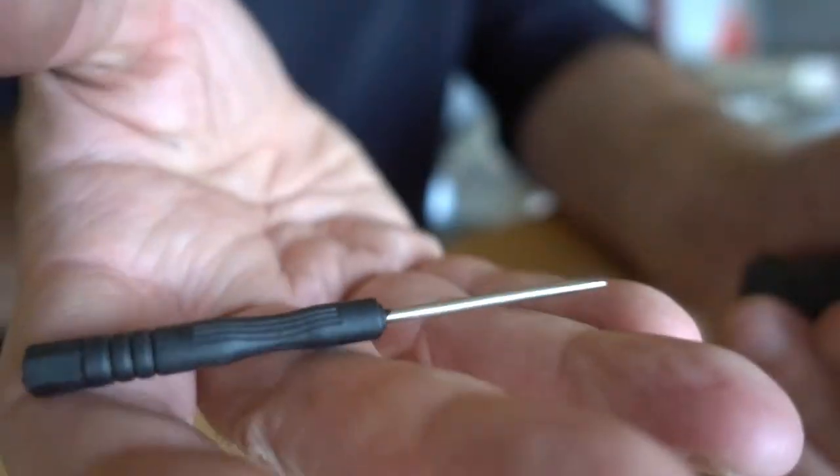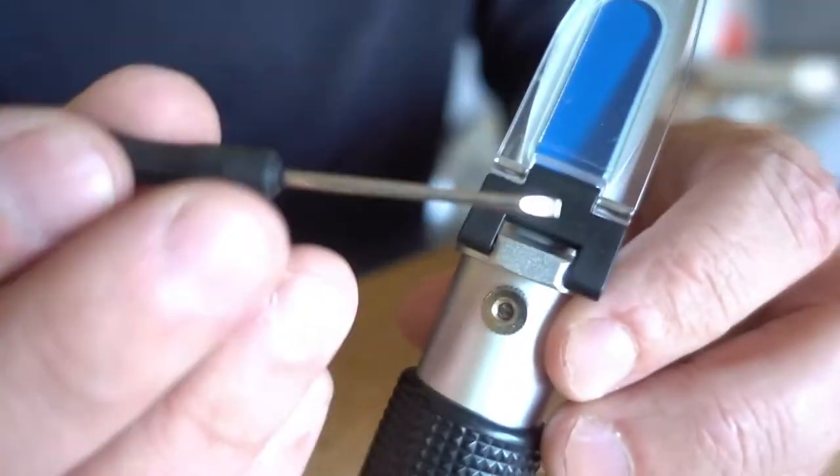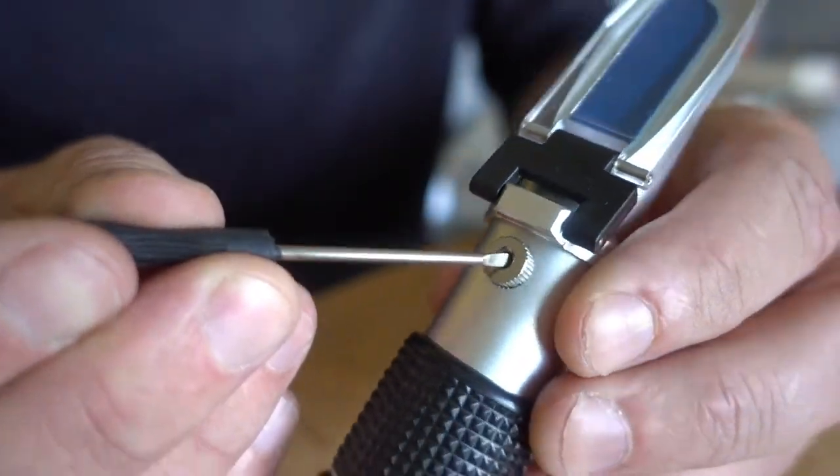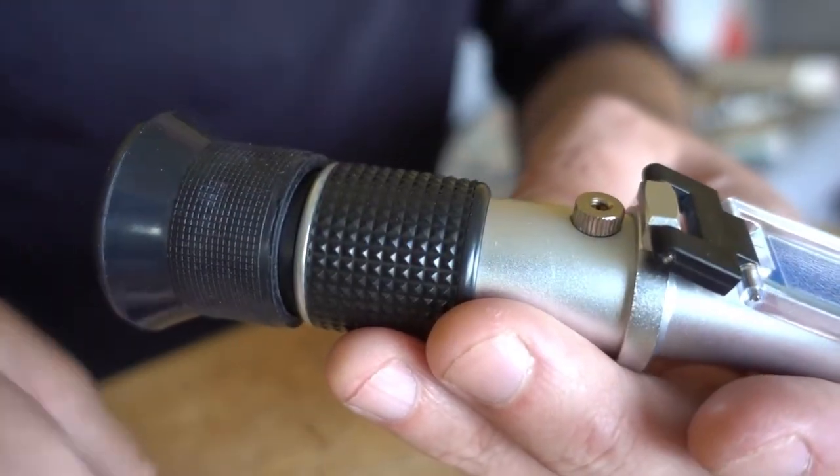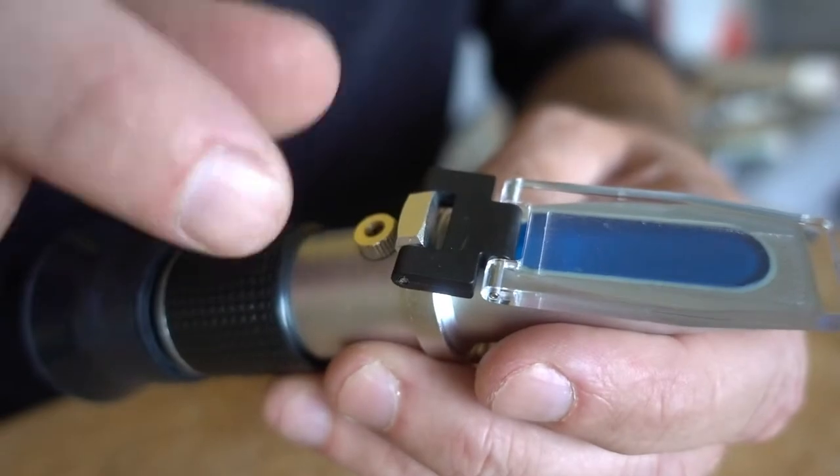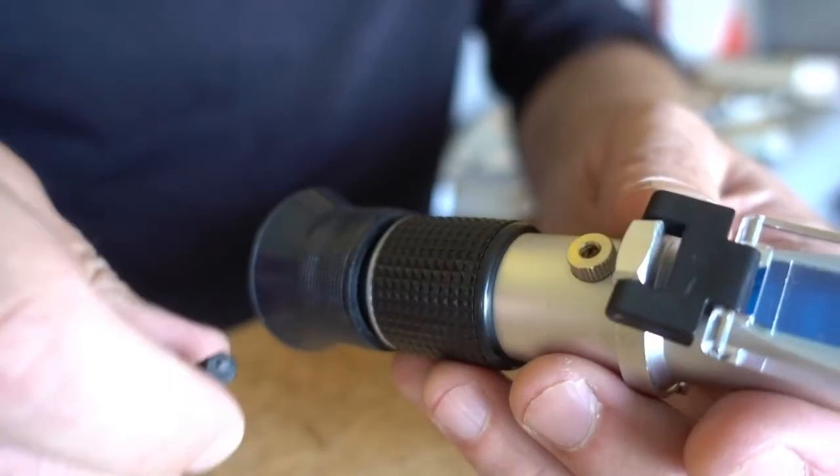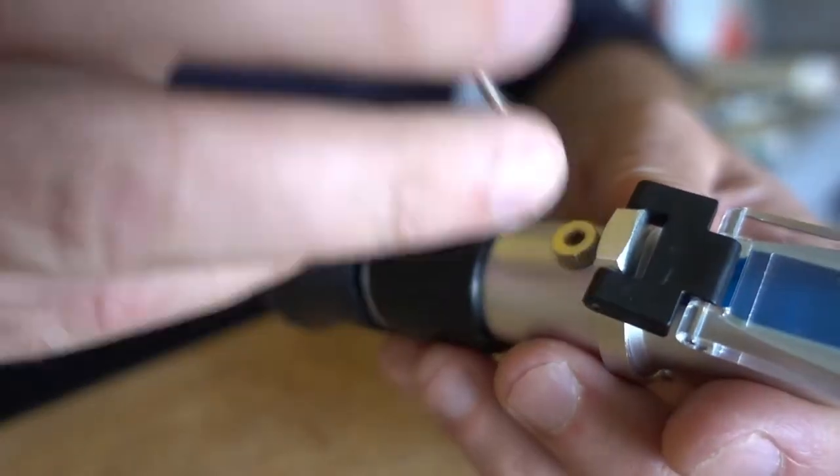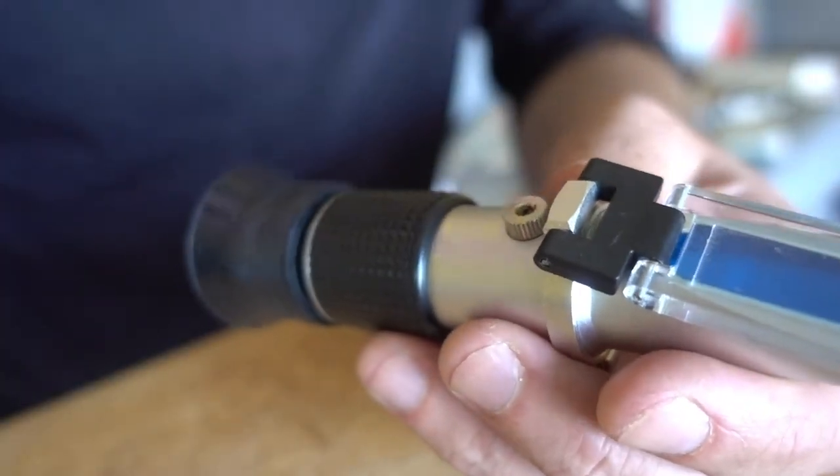Most refractometers will come with a small screwdriver like this even the cheap ones and the screwdriver goes right here into this little screw right above the top of the refractometer and this screw is used to calibrate the sensitivity of the refractometer. So if the reading is wrong or off in any way you can use this little screwdriver to just fine tune it.